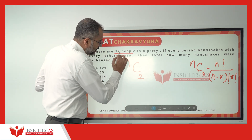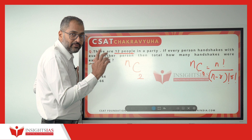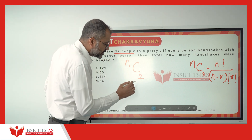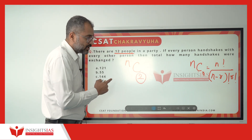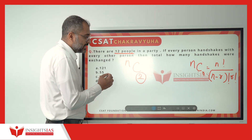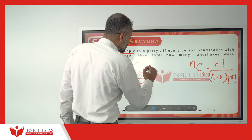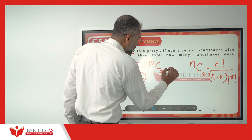Now, look here. Even though 12 people are there, every time a handshake occurs, only 2 people are required. That is why we use NC2. In this case, NC2 is nothing but 12C2.